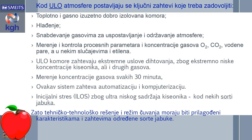Komora mora biti toplotno i gasno izuzetno dobro izolovana, zatim potrebno je obezbediti hlađenje, snabdevanje gasovima za uspostavljanje i održavanje atmosfere, merenje i kontrolu procesnih parametara i koncentracije gasova — pre svega kiseonika i ugljen-dioksida, zatim vodene pare, a u nekim slučajevima i etilena. ULO komore zahtevaju ekstremne uslove dihtovanja zbog ekstremno niske koncentracije kiseonika. Merenje koncentracije gasova mora da se vrši svakih 30 minuta, što je znatno kraći vremenski period u odnosu na druge kontrolisane atmosfere. Ovakav sistem zahteva automatizaciju i kompjuterizaciju.